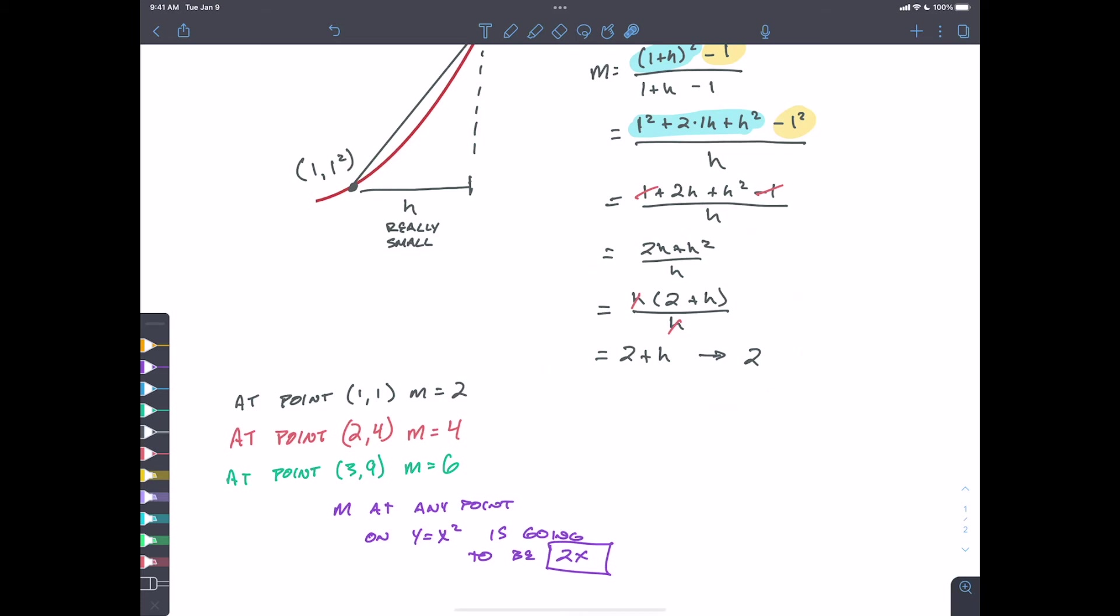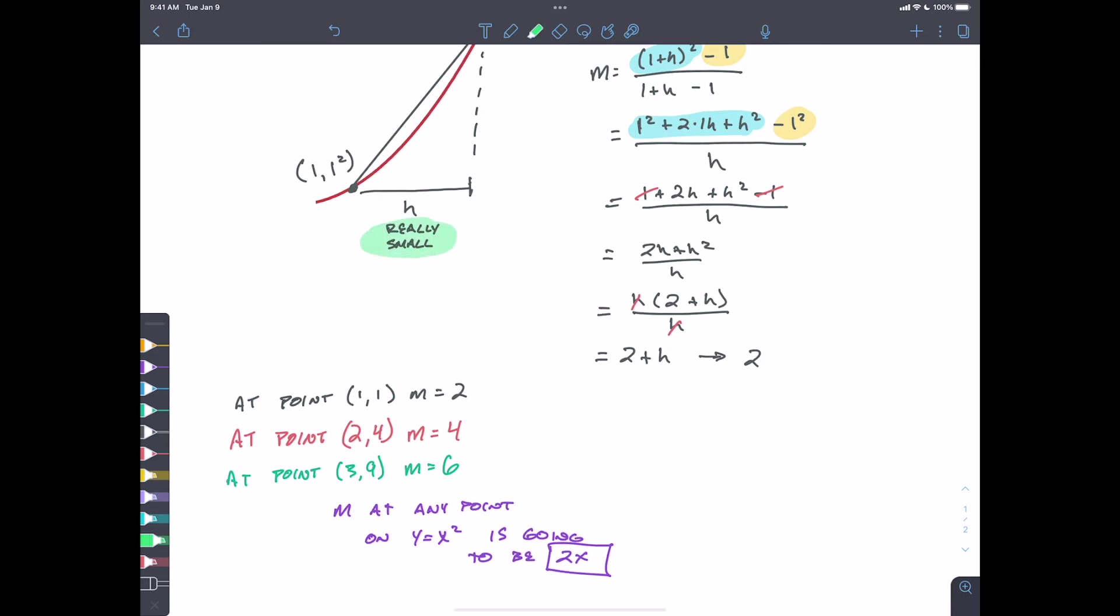And this is the beginnings of this idea of what the first principle is. So by this point getting really small, that's like us saying h is going to be approaching zero. This distance between these two things is going to be getting so small that the distance is practically zero, but not zero.